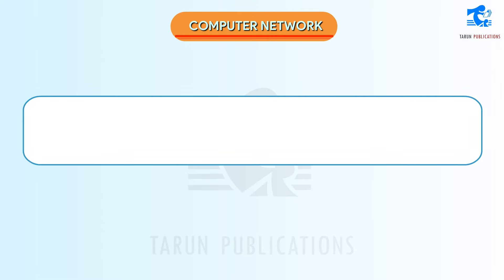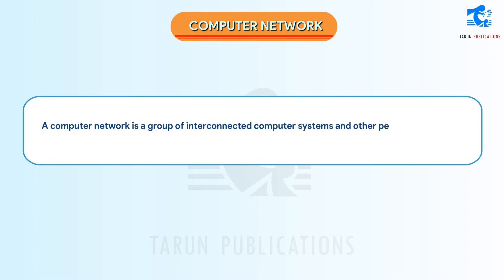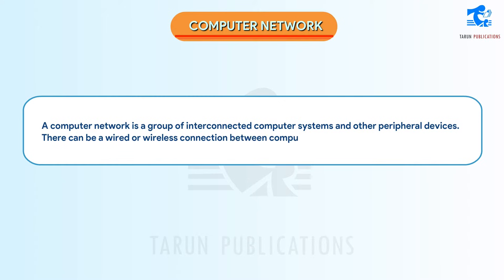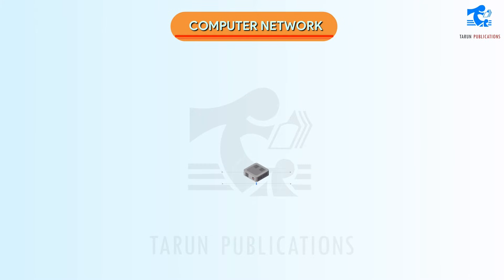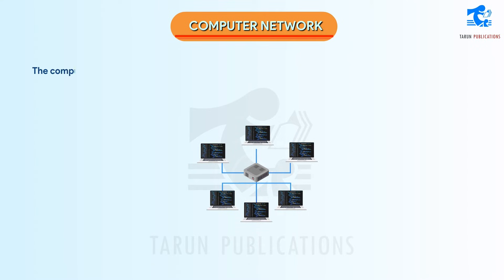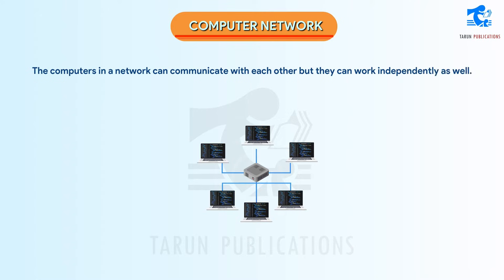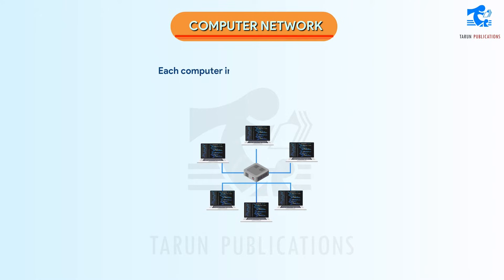A computer network is a group of interconnected computer systems and other peripheral devices. There can be a wired or wireless connection between computers in a network. The computers in a network can communicate with each other, but they can work independently as well. Each computer in a network is called a node.